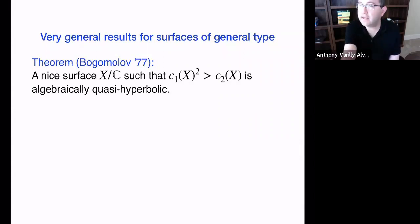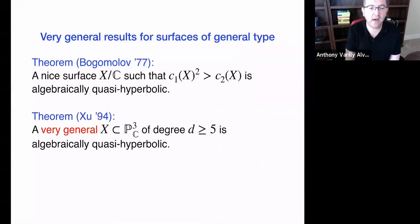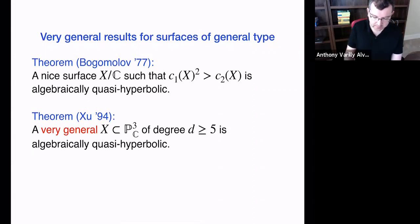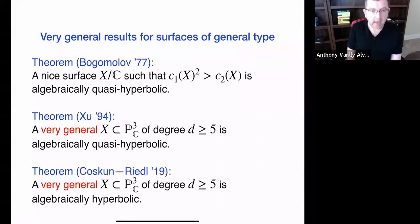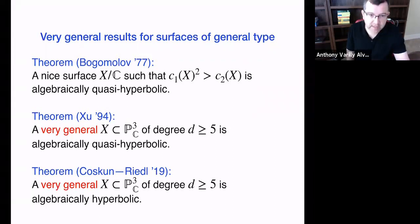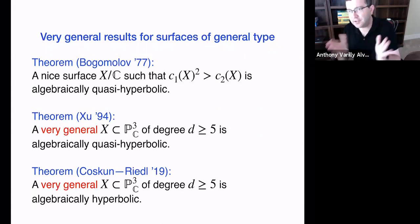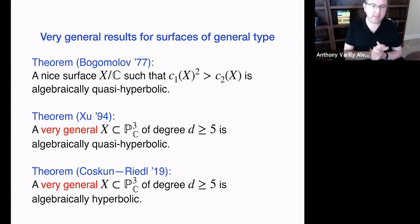For surfaces of degree ≥ 5 in P^3, this follows from genus bounds due to Xu in 1994. Very recently, Coskun and Riedl improved Xu's bounds to show that a very general surface in P^3 of degree at least five is not only algebraically quasi-hyperbolic but is algebraically hyperbolic in the stronger sense.